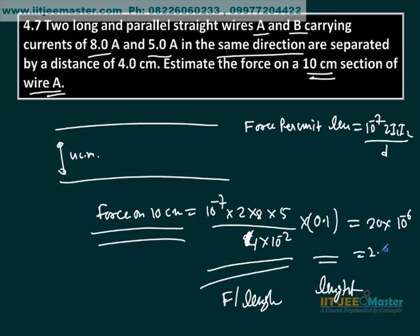So it is 2.0 times 10 to the power minus 6 newton. This is the answer. Very easy question again.